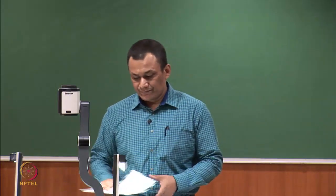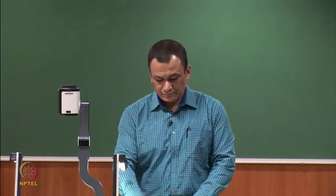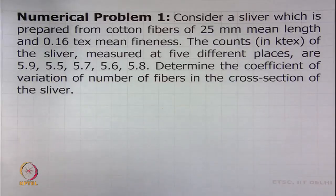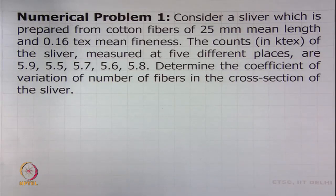We start with numerical problem 1. Consider a sliver prepared from cotton fibres of 25 millimeter mean length and 0.16 tex mean fineness. The counts in kilo tex of the sliver measured at 5 different places are 5.9, 5.5, 5.7, 5.6, and 5.8. Determine the coefficient of variation of number of fibres in the cross section of this sliver.